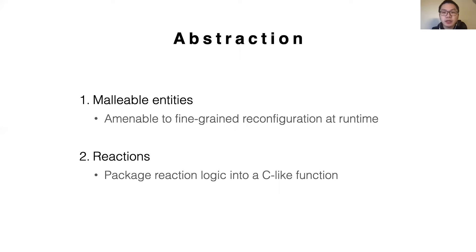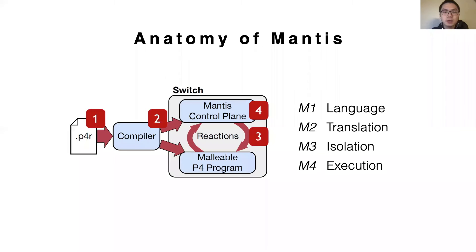The Mantis compiler then transforms the P4R code into deployable code, ensuring runtime reconfiguration and serializability of the reaction loop. There are two core abstractions underlying Mantis. The first is malleable entities, which is a set of primitives that are amenable to runtime reconfiguration. The second is reaction, which packages the fine-grained reaction logic into a C-like function. For the rest of the presentation, we'll walk through each component of Mantis by taking a top-down approach.